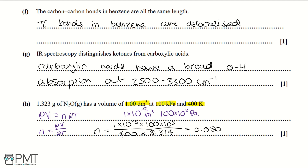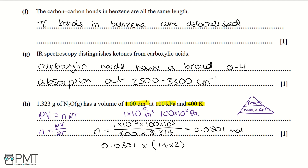Then using mass = moles × relative formula mass, we multiply 0.0301 by the relative formula mass of N₂O, which is (14 × 2) + 16 = 44. This gives 1.323 grams, proving the stated value. To get the mark, correctly work out the grams using the ideal gas equation PV = nRT.